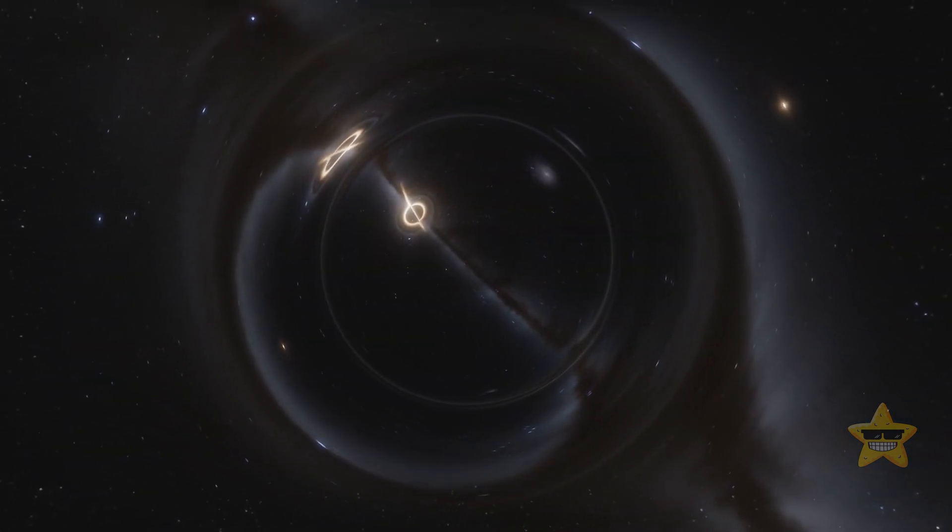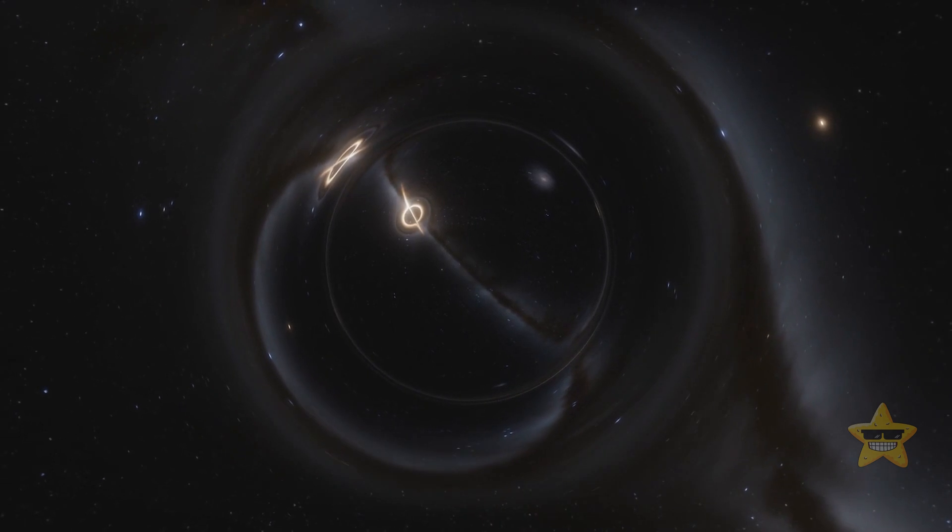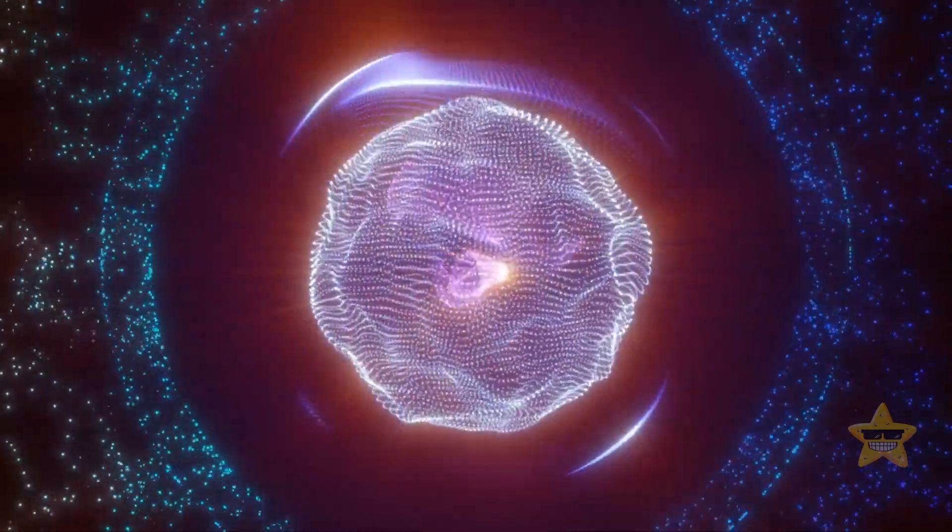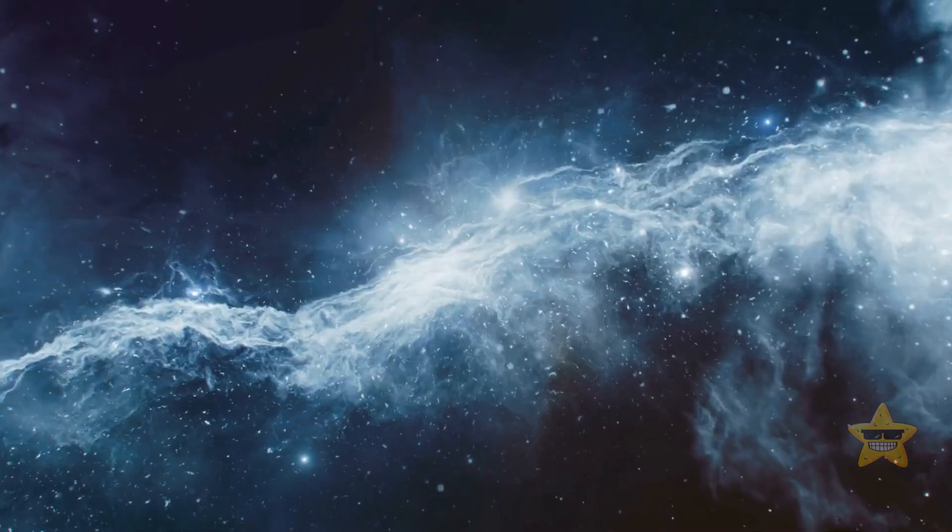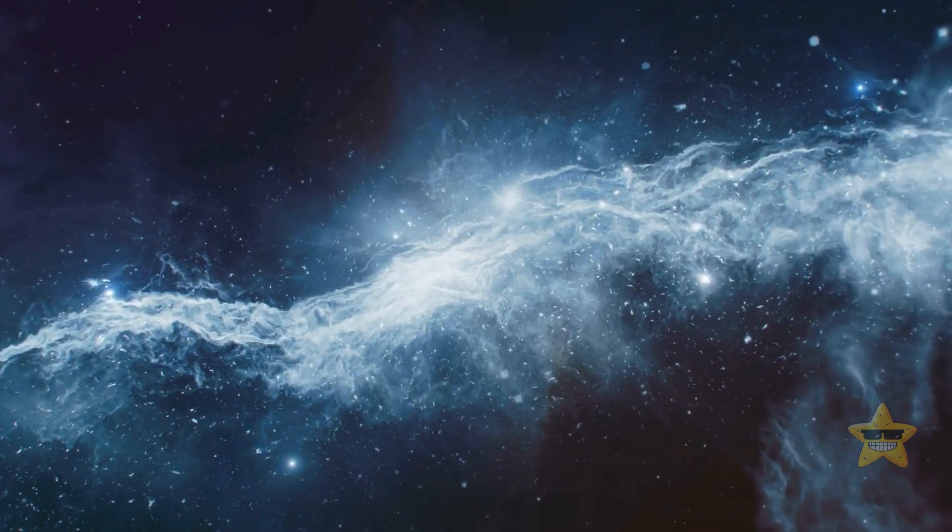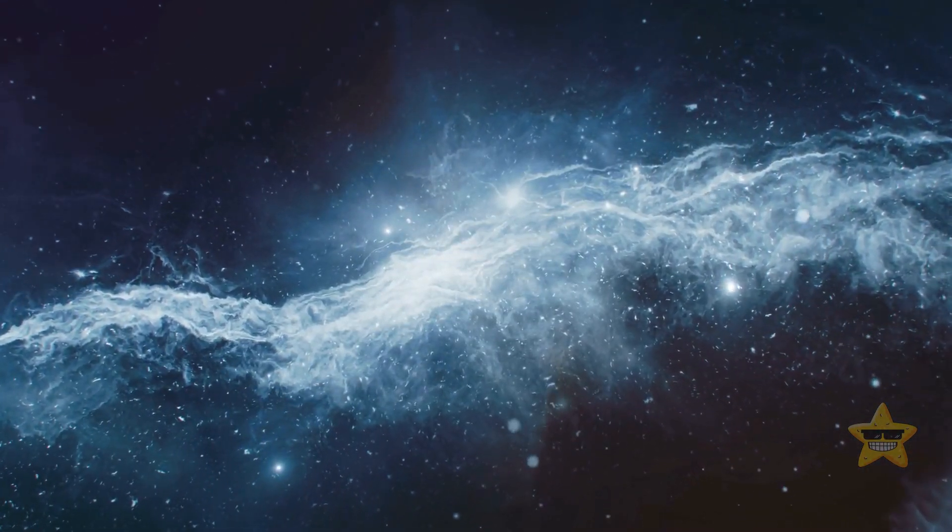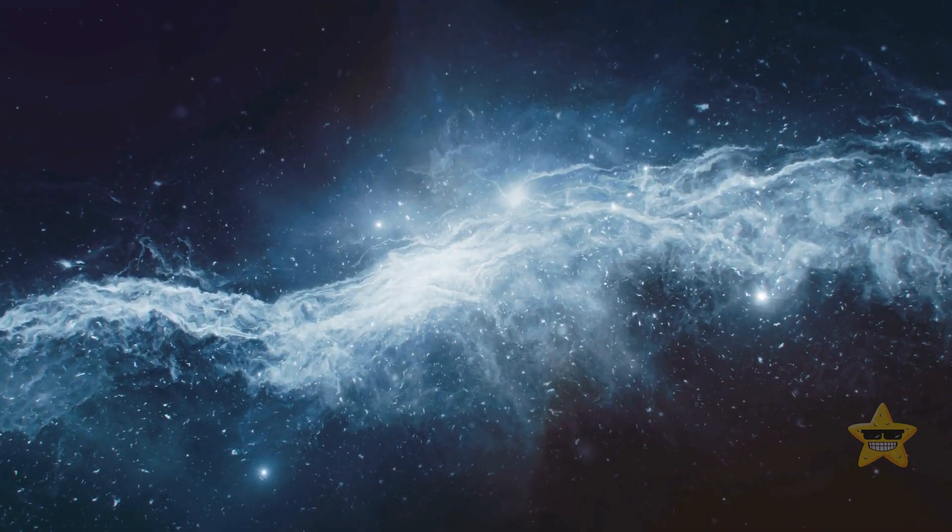But then, what could make a black hole want to turn itself inside out? According to quantum mechanics, many things we perceive as continuous are granular. Even light is not a continuous wave. It's made up of photons. So, if we apply quantum mechanics to space itself, we'll find out that the cosmos is granular too.